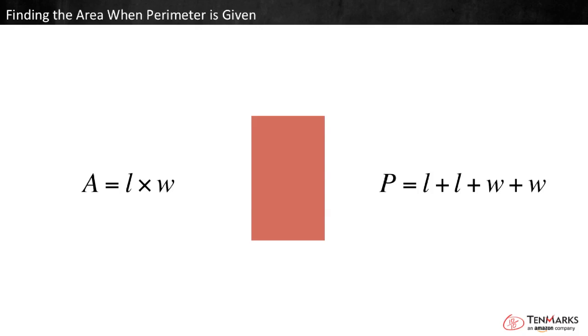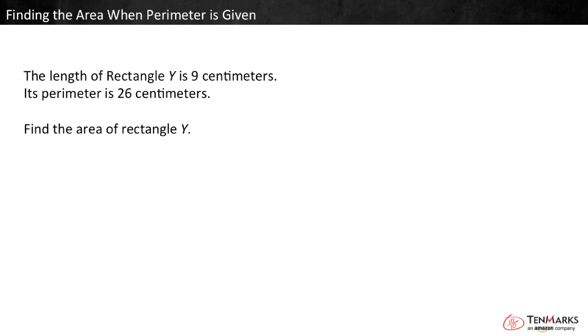The side lengths of a rectangle determine both its area and its perimeter. Sometimes you are given the perimeter and you have to find the area. How can you do this? Let's look at a sample problem.